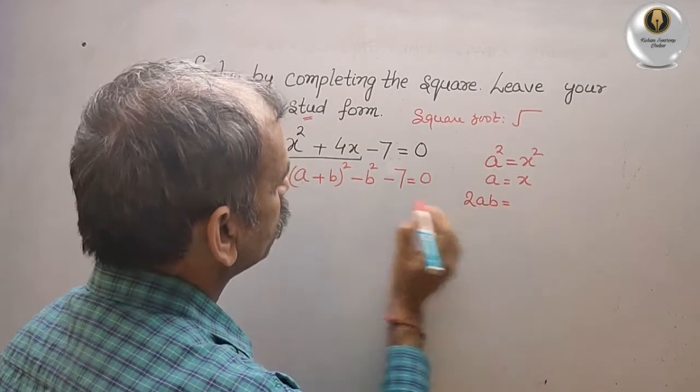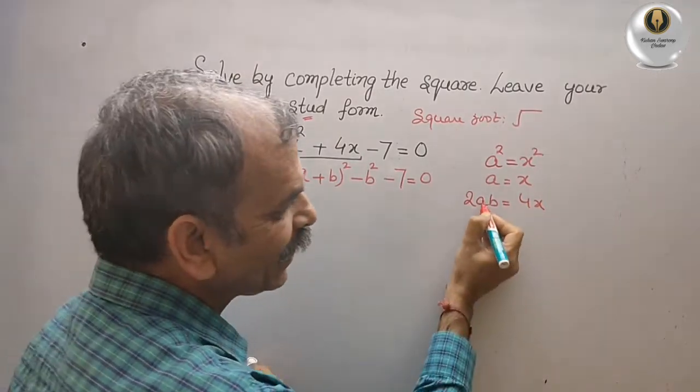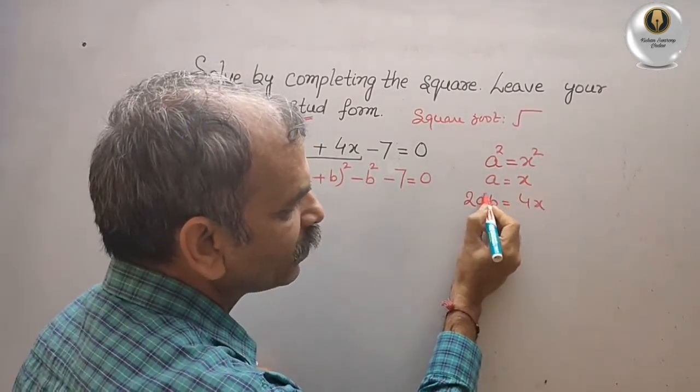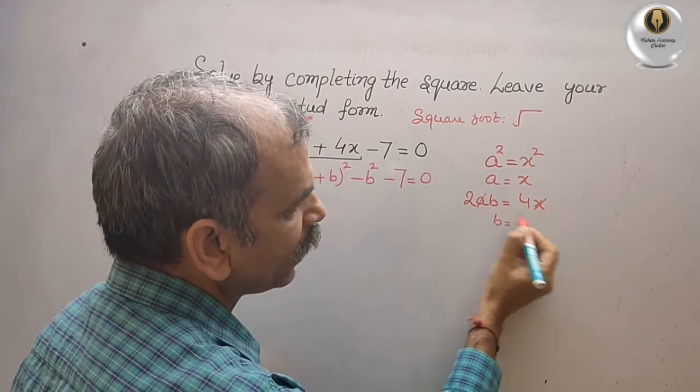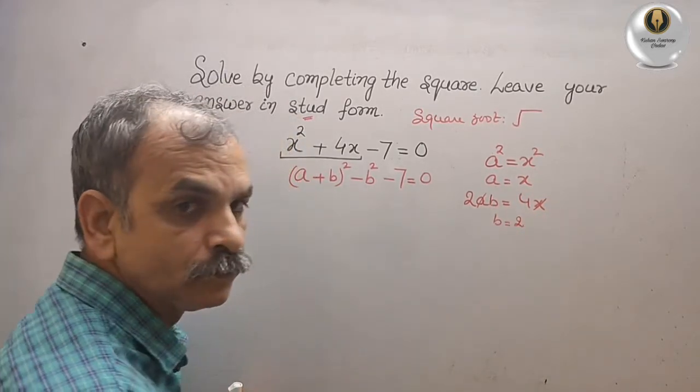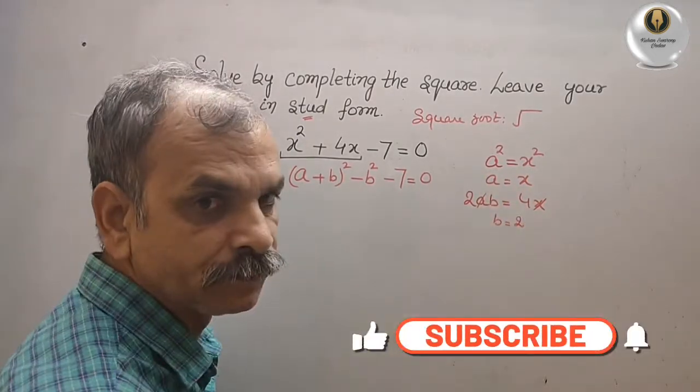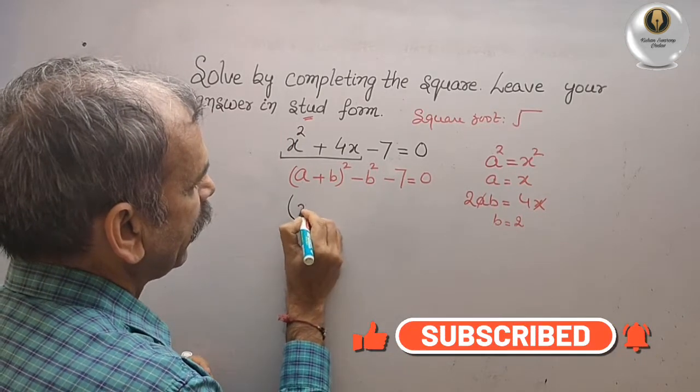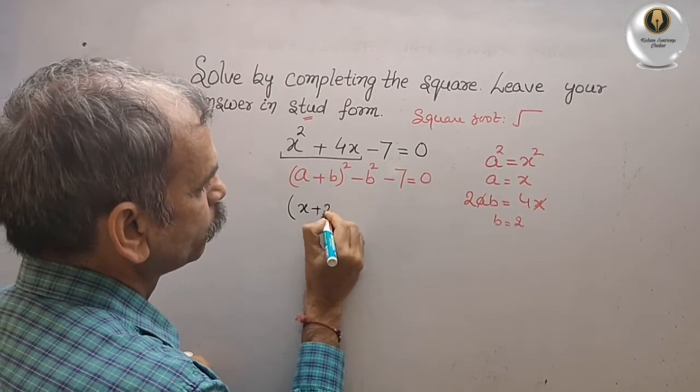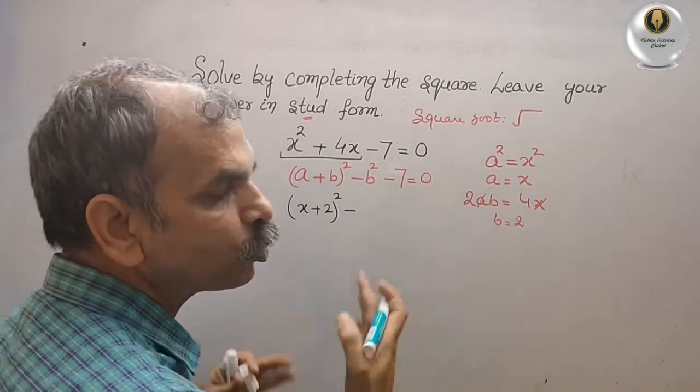2ab is equal to the middle term, that is your 4x. We know that a is equal to x, so this and this cancel. b is equal to 4 ÷ 2 = 2. Now substitute a and b values here. We will get (x + 2)² - 2² = (x + 2)² - 4 - 7 = 0.